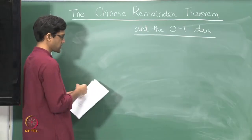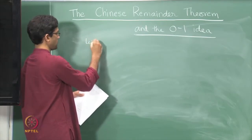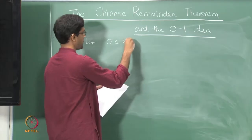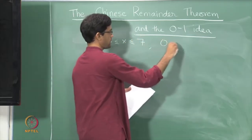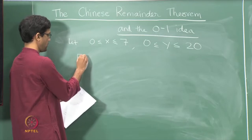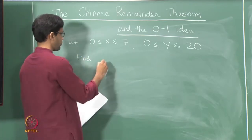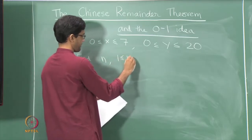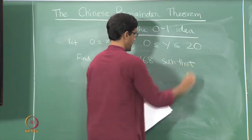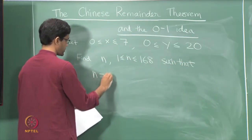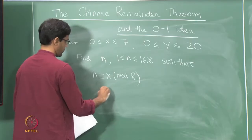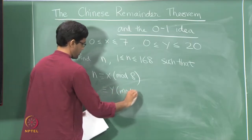Here is the same question as last time, but a little more general. Let x be any number between 0 and 7, and y be any number between 0 and 20. The question is: find a number n between 1 and 168 such that n satisfies those two congruences — n is congruent to x mod 8 and congruent to y mod 21.